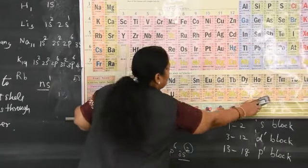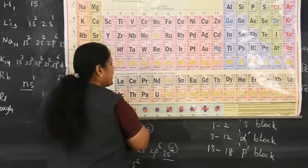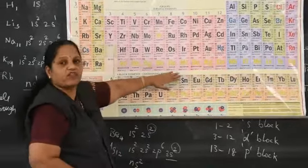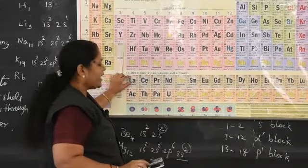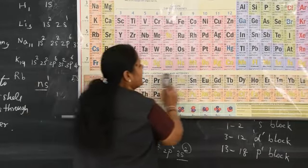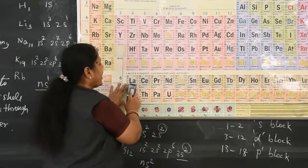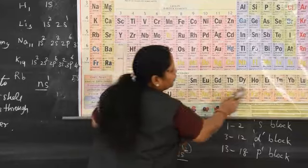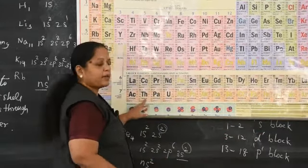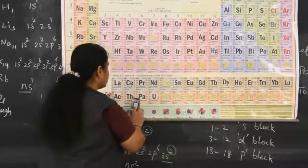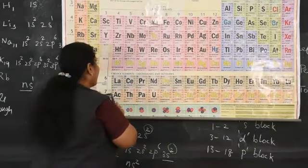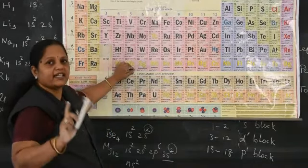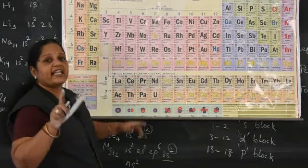All actinoid elements are radioactive. In the lanthanoid series, starting from cerium (58) to lutetium (71), the property of these 14 elements is similar to lanthanum — that is why these 15 elements are collectively called the lanthanoid series. Similarly, from thorium onward there are 14 actinoid elements similar to actinium, called the actinoid series. F block elements are otherwise called inner transition elements.